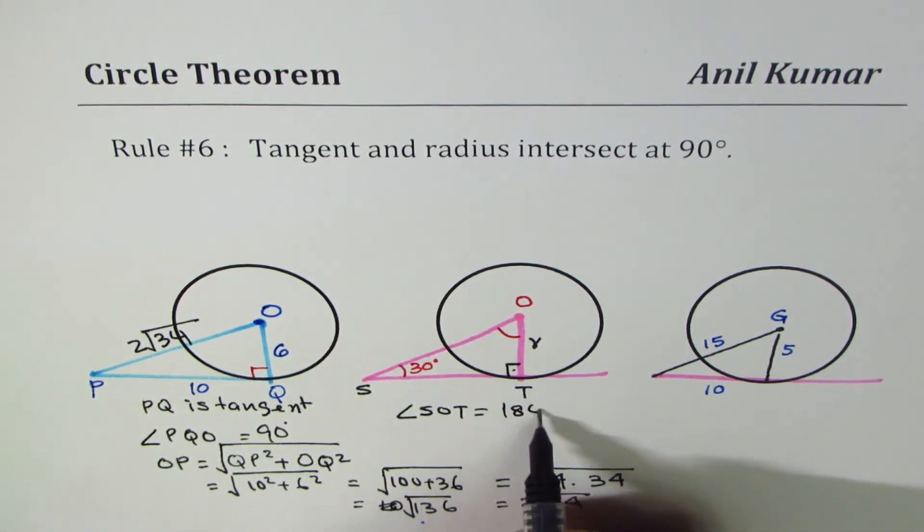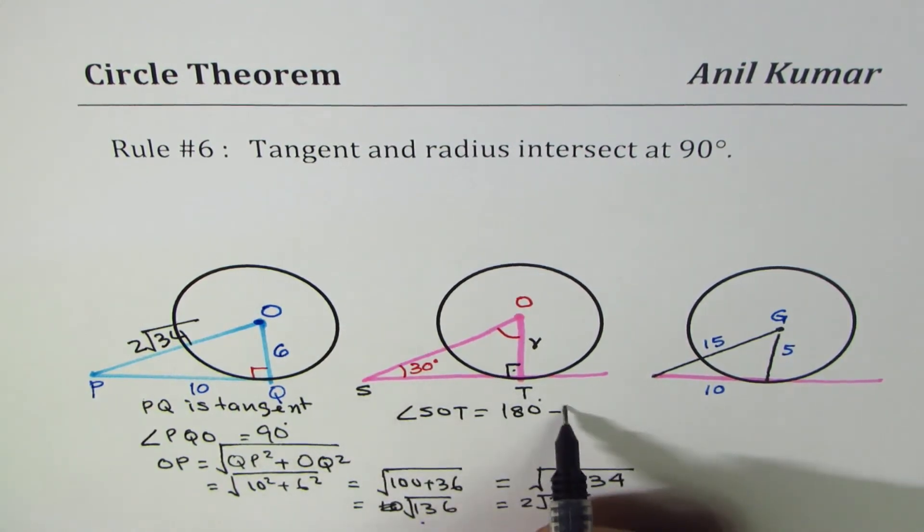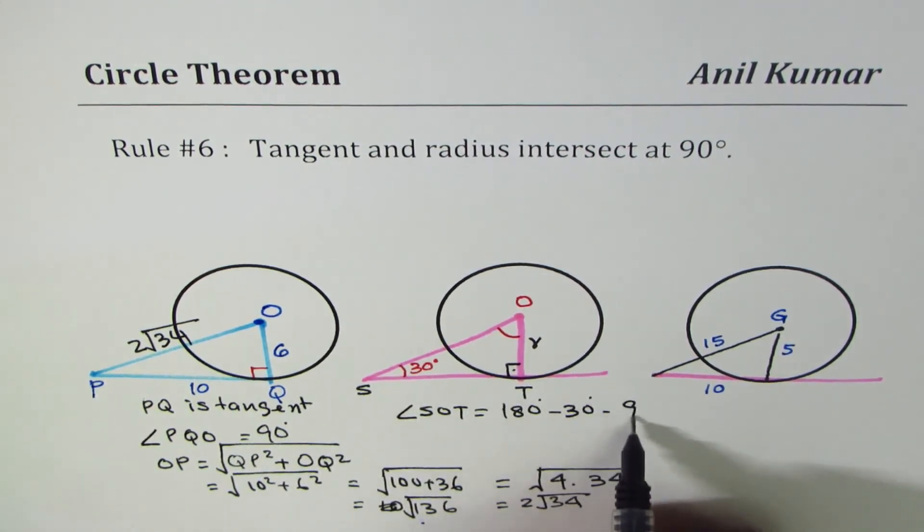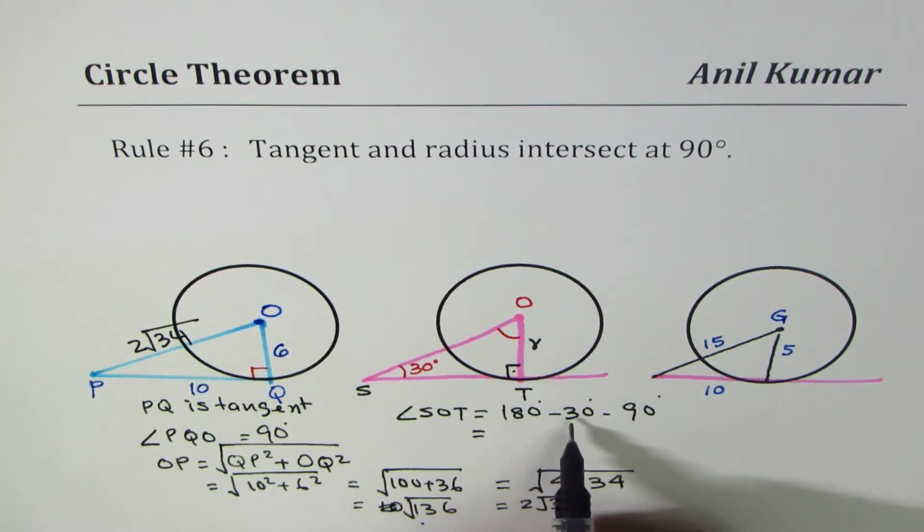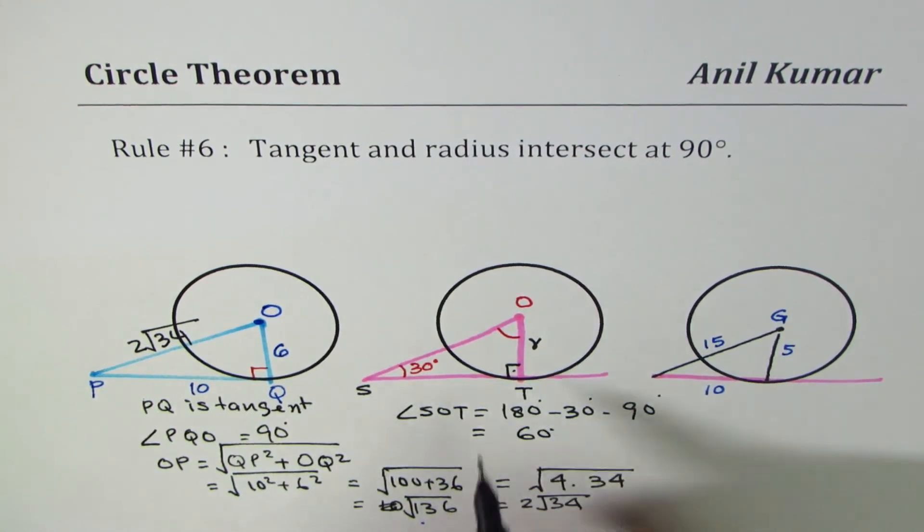You could also say 180 degrees take away 30, take away 90 degrees. And that gives you 90 minus 30, which is 60 degrees. So this angle will be 60 degrees.